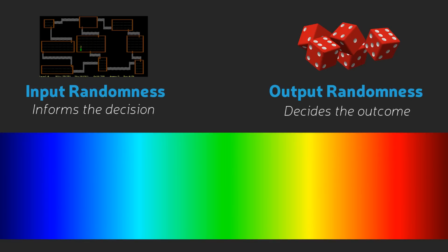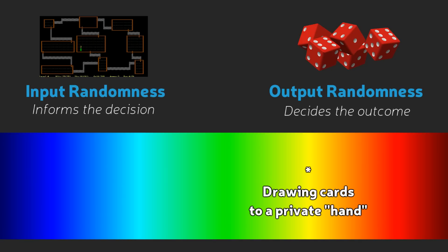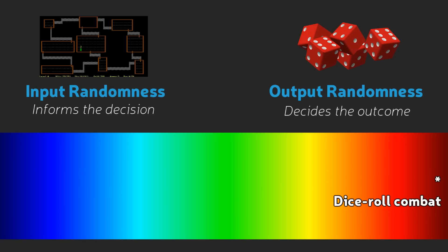Input and output randomness exist on a spectrum. While the middle can be a bit hazy, the ends are very easy to identify. Essentially, the question is how close is the randomness to the point of your decision. In the case of map generation, that's probably as far away as it can get — all players know this information from the moment the game starts. Slightly closer would be face-up cards that draw out every few turns; you probably have a few turns to respond, so I'd still call that input randomness. Slightly closer might be card drawing, which happens usually every turn but doesn't always affect you right away. Finally, we get to randomness that squeezes in after you make a decision and determines the outcome — at this point, we're talking about pure output randomness. You have literally no time at all to respond to this random information that just entered the game.